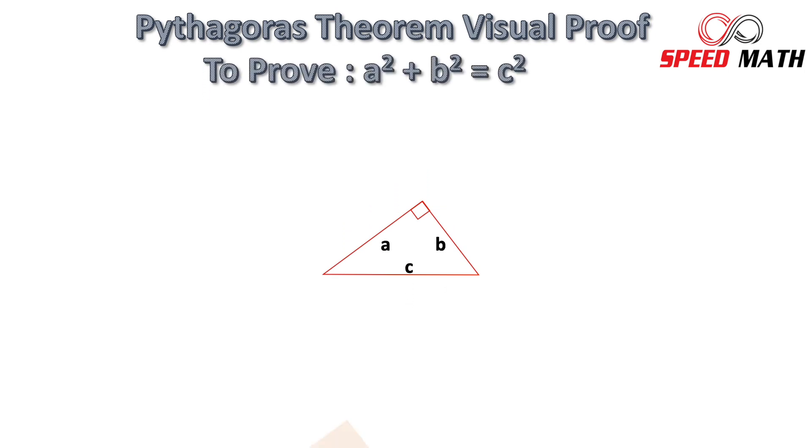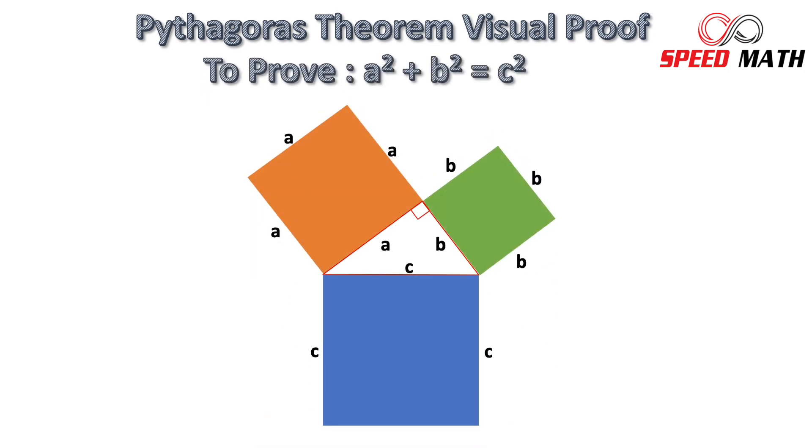So let's begin. So what we are going to do here is we are going to insert three squares with side A, side B and side C as shown in the figure. Now we all know that area of square is side square. So the area of square with side A will be A square and area of the square with side B will be B square and likewise area of the square with side C will be C square.